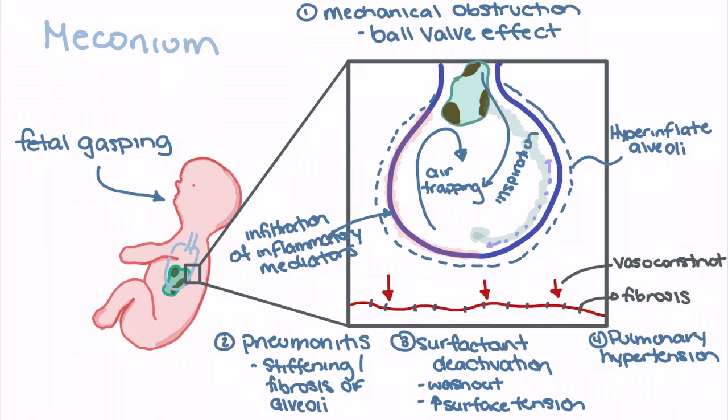On top of meconium's action in creating pulmonary hypertension, the V/Q mismatch of less than one created in the neonatal patient with meconium in their lungs also leads to hypoxic vasal constriction, further augmenting pulmonary hypertension.